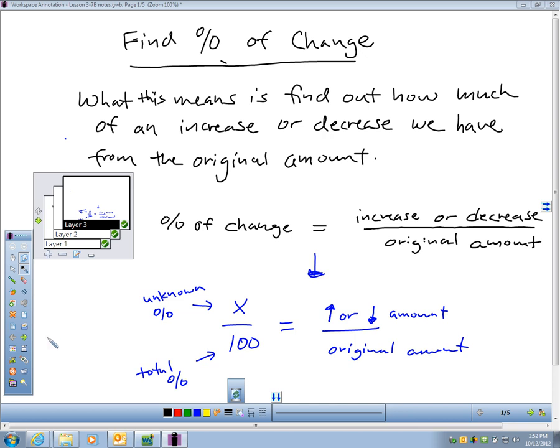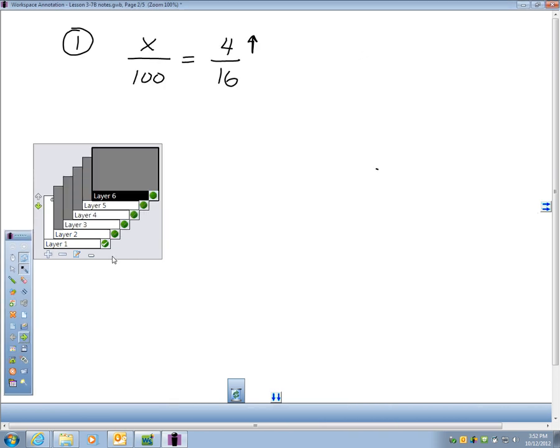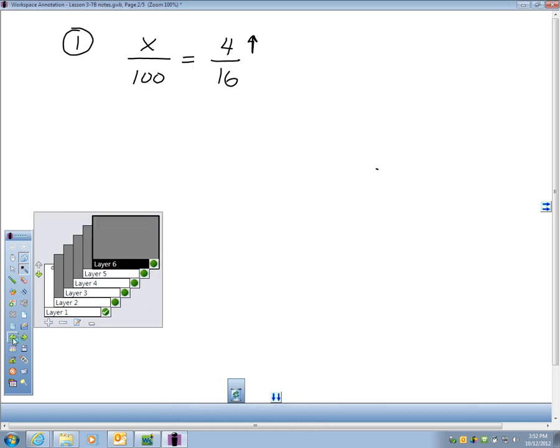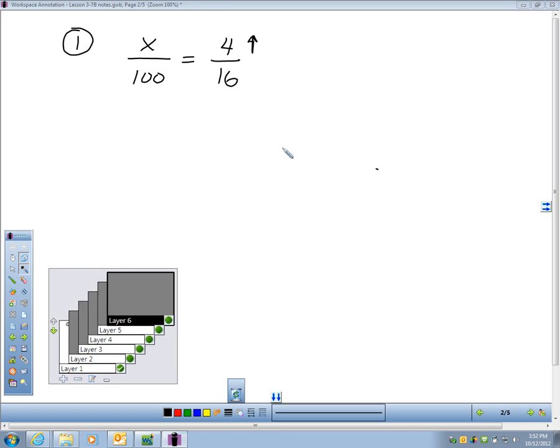So why don't you take a look at number one on page 183, and here's the directions. It says, identify the percent of change as an increase or decrease, then find the percent of change. So in question one, let's talk about that first of all. Our original amount is 16, and the new amount is 20. I think everybody can think through that, that starting at 16, finishing at 20, we definitely have an increase. So maybe I should just write that here. Number one is definitely an increase.